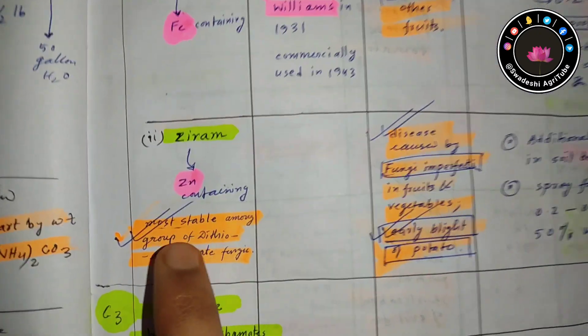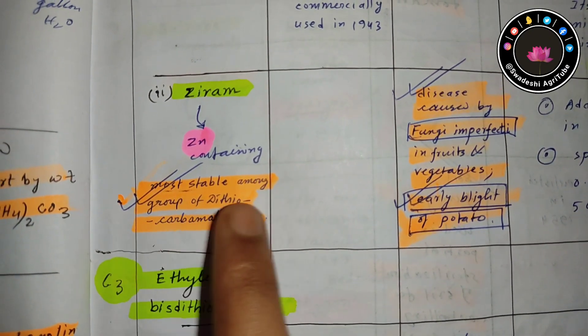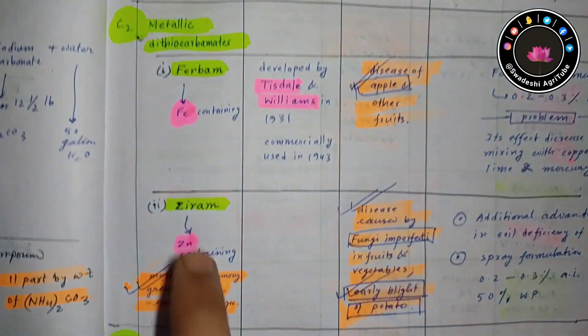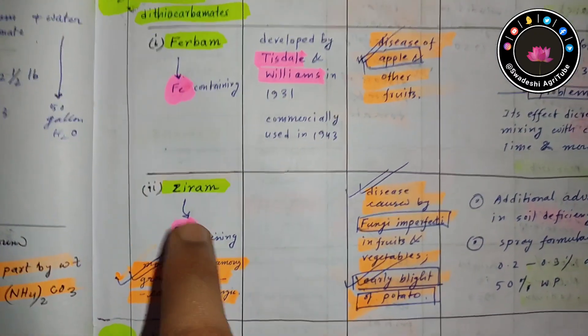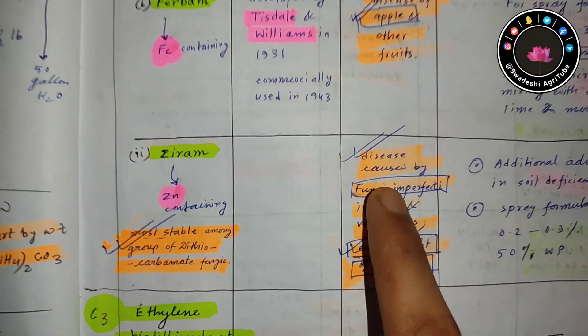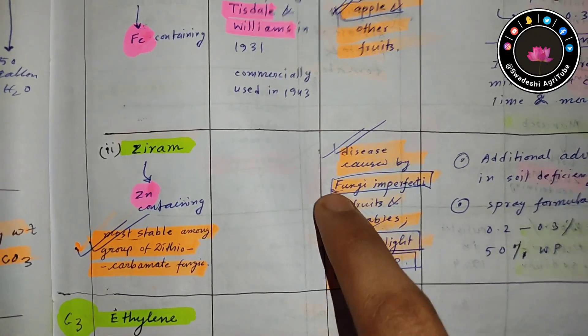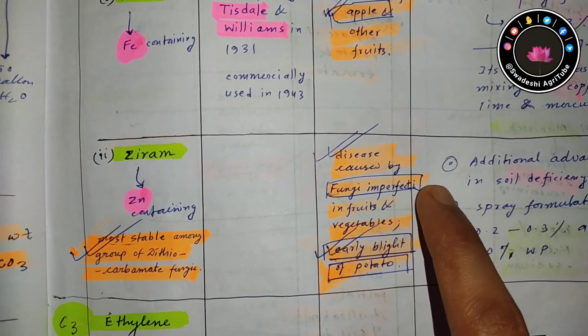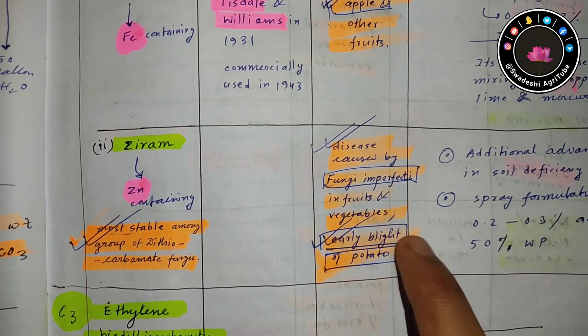In case of ziram, it is the most stable among the diethiocarbamate fungicides. This is an important point. The diseases it controls - ziram controls all diseases caused by fungi imperfecti and also controls early blight of potato.